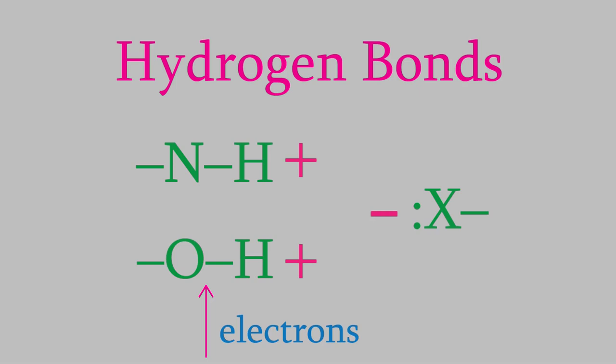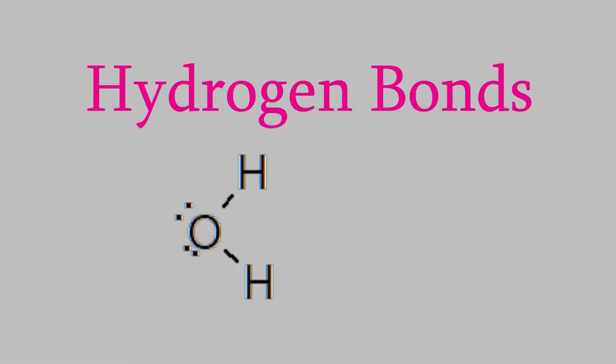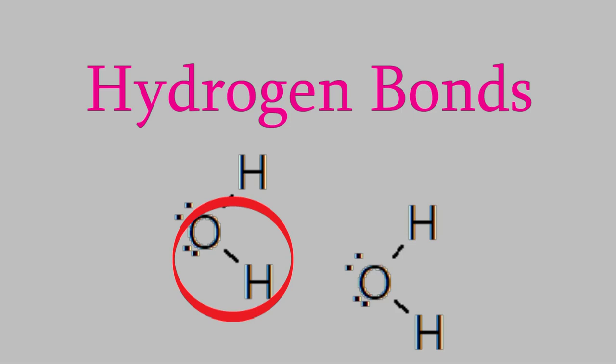One common molecule that experiences hydrogen bonds is water. In a hydrogen bond, we need two things: on one molecule, we need a hydrogen atom bonded to an oxygen or a nitrogen — we definitely have that in a water molecule. In the other molecule, we need an unshared electron pair. If you look at the Lewis dot structure of water, you can see that the oxygen in water has electron pairs on it, so it can form a hydrogen bond with another water molecule.